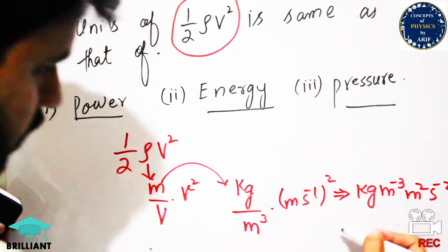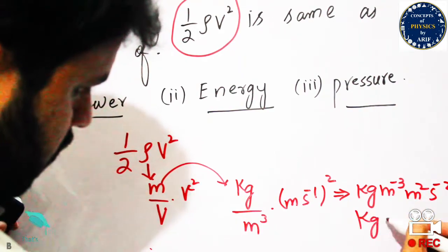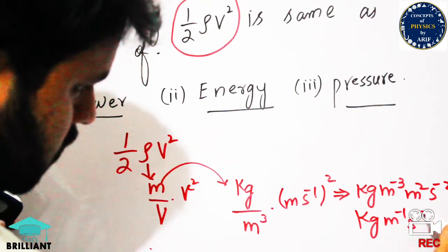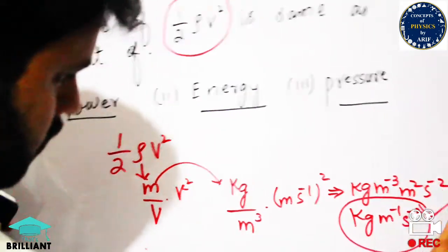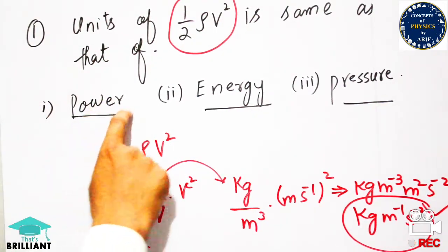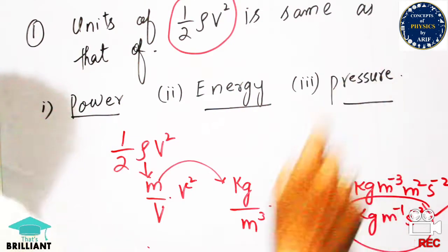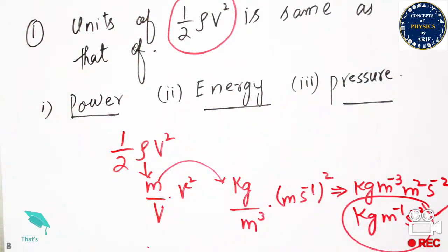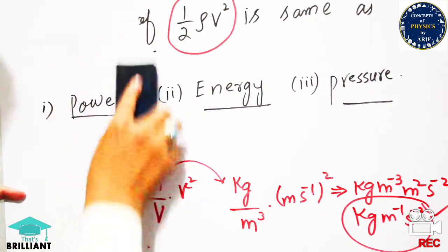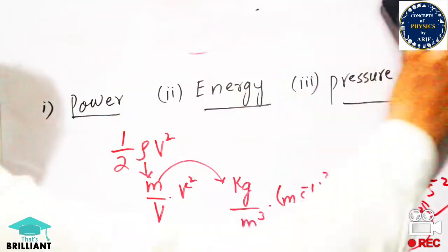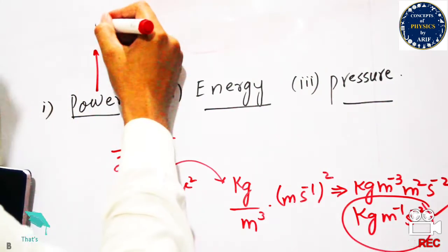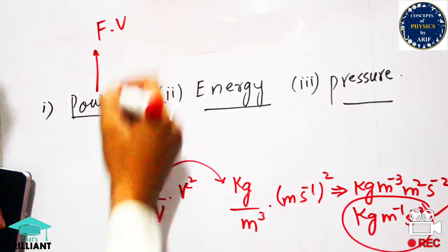Joining these terms gives us kg·m⁻¹·s⁻². This is the unit for the expression ½ρv². Now we need to calculate the units of power, energy, and pressure, and match which one equals this expression.